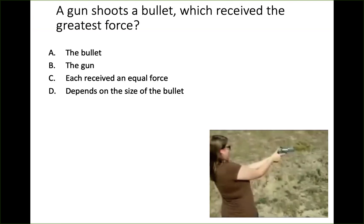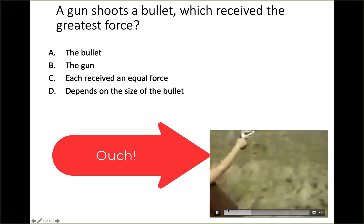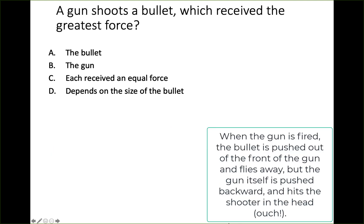A gun shoots a bullet — which received the greatest force? The bullet, the gun, both received equal force, or does it depend on the size of the bullet? Newton's Third Law came into play: the gun accelerated back toward the shooter (recoil), while the bullet came out the front in the opposite direction. The answer is they each received an equal force.